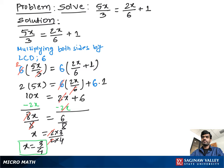Now let's check that x value is the right value for the original equation or not. So we can write the problem one more time: 5x over 3 equal to 2x over 6 plus 1.